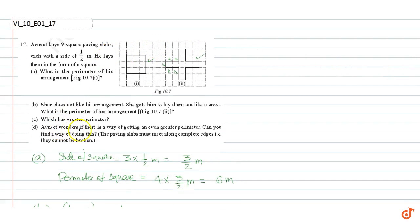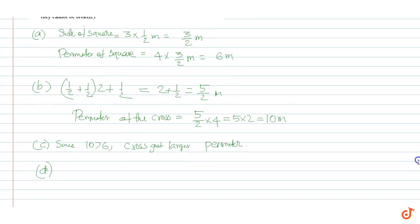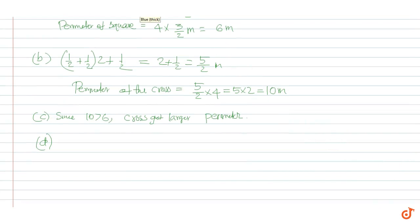Part D: Avnit wonders if there is a way of getting an even greater perimeter. Can you find a way of doing this? The paving slabs must meet along complete edges and cannot be broken. The arrangement that will have the maximum perimeter will be considered.